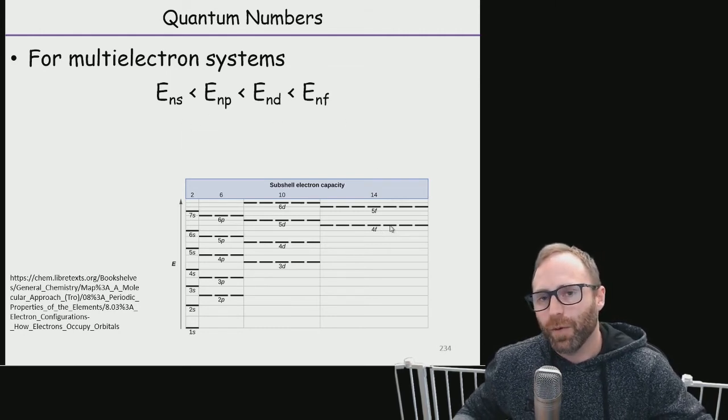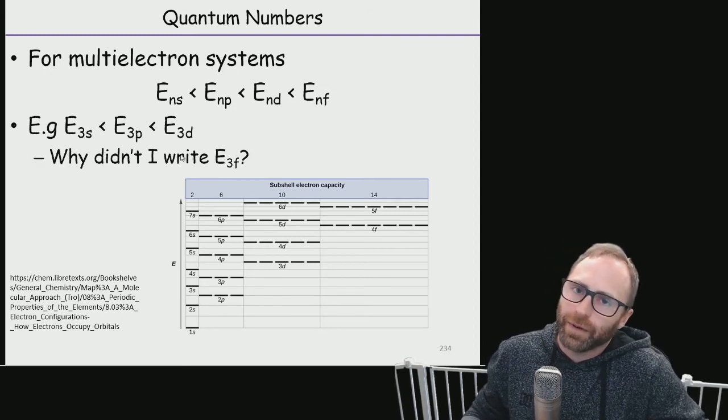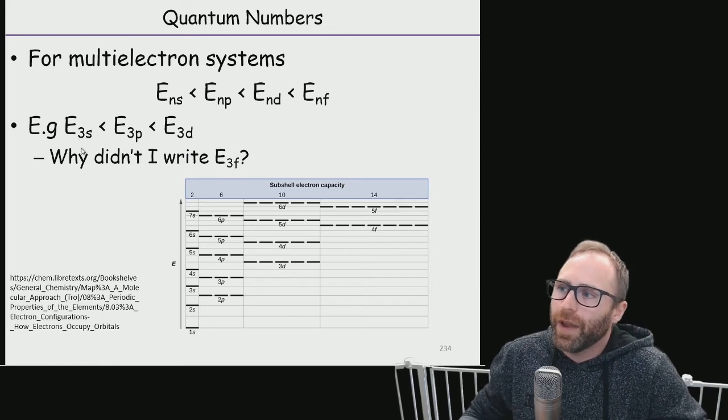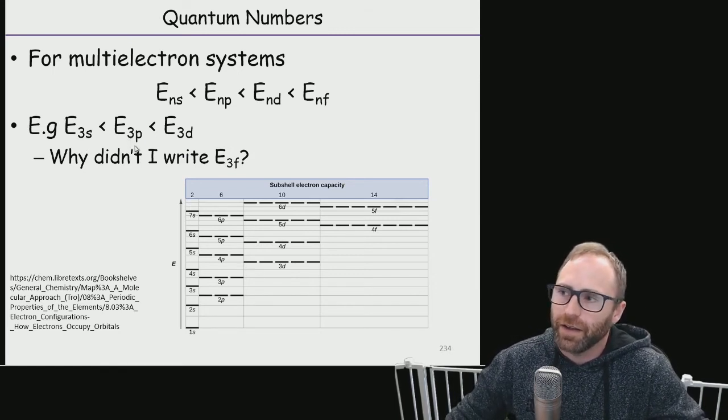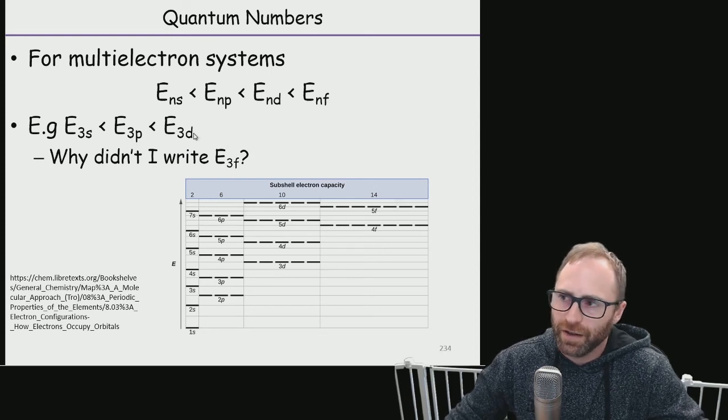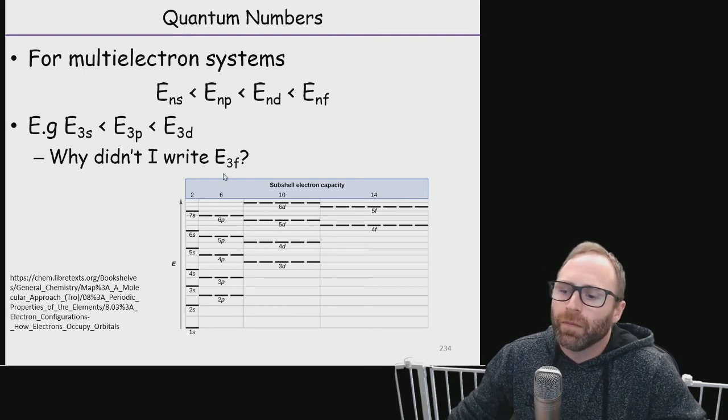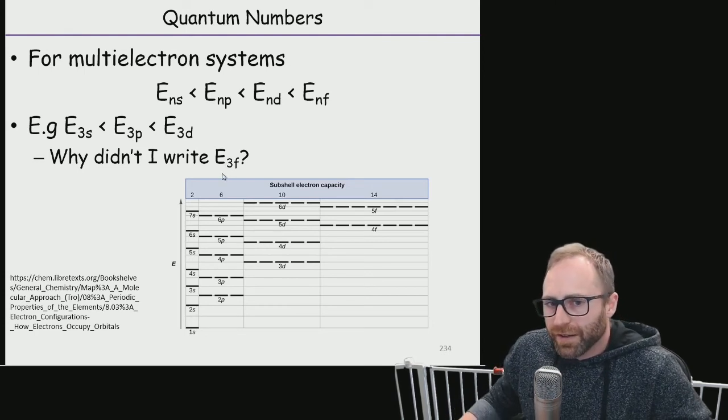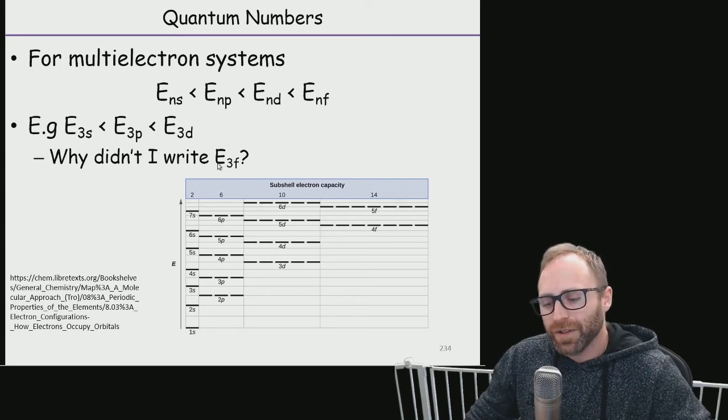Now I've got this little self-test written up here. We have this example of 3s is less energy than the energy of the 3p, less energy than the energy of the 3d. Why didn't we write out 3f? So I'm going to give you a second here to think about why we didn't write out 3f before we talk about it.